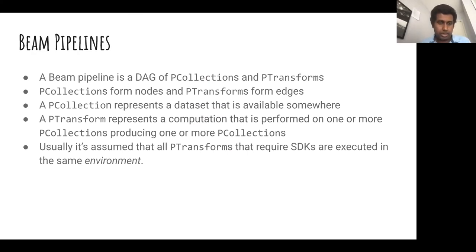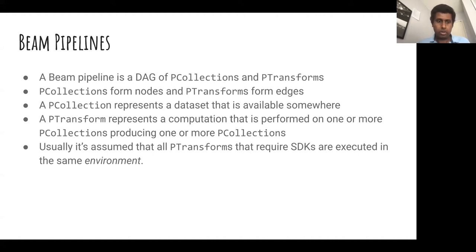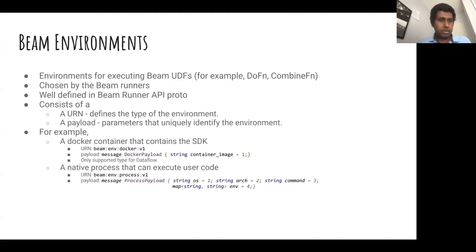At a high level, a Beam pipeline is a directed acyclic graph of PCollections and PTransforms. PCollections form the nodes of the graph, and PTransforms form the edges. A PCollection basically represents a dataset that's available somewhere — it could be on your local machine or in some distributed storage. A PTransform represents a computation that is performed on one or more PCollections, producing one or more PCollections. Usually it's assumed that all PTransforms that require SDKs are executed in the same environment.